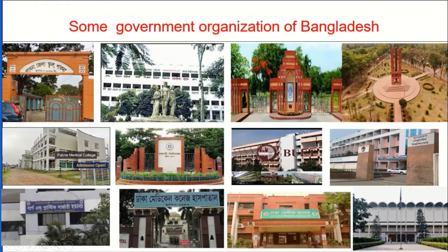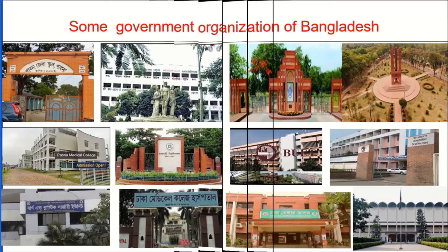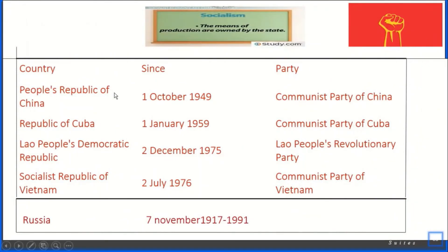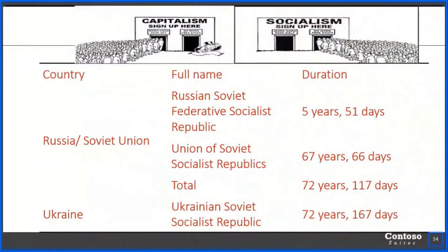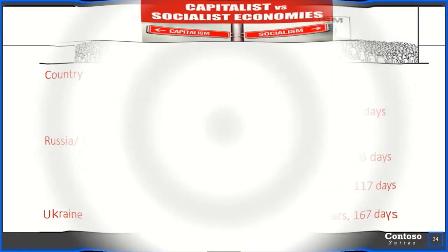I have given some pictures of government organizations of Bangladesh. You can see here: Papna Jala School, Dhaka University, Rajshahi University, Jahangirnagar University, BUET, Textile, Dhaka Medical, Dhaka Dental College, National Museum, Papna Medical College, and Dhaka Medical Burn Unit. Here is one chart — you just see or follow the chart; no need to memorize. Another chart is also given here.